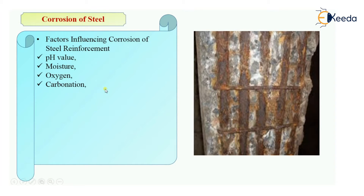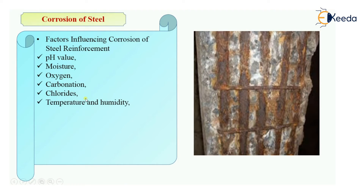Carbonation — carbon dioxide which is present in the atmosphere reacts with calcium carbonate, and that results in rusting, due to which the pH value will also reduce. So carbonation will also influence the corrosion of steel reinforcement. Then chloride attacks will also influence the corrosion of steel reinforcement. Even temperature and humidity will also affect the corrosion of steel.